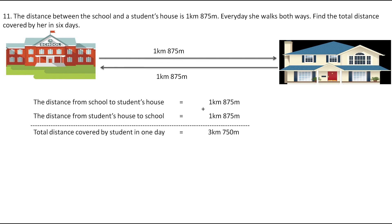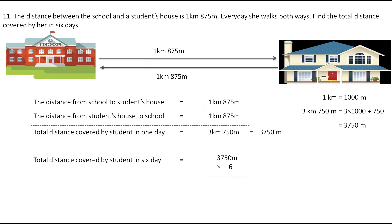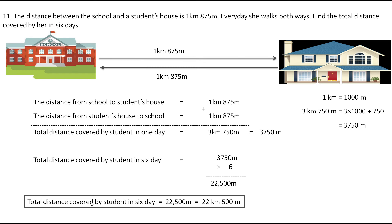To find the total distance covered in six days, we first convert into meters. We know 1 kilometer equals 1,000 meters, so 3 km 750 m becomes 3 × 1,000 + 750 = 3,750 meters. To find the six-day total, we multiply 3,750 by 6, which gives 22,500 meters. The final answer is the total distance covered in six days equals 22,500 meters, or 22 km 500 m.